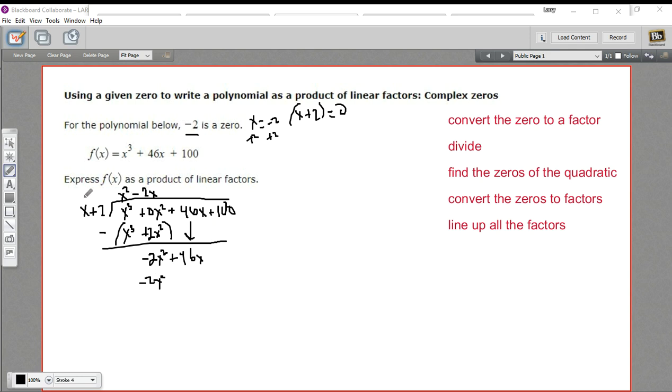And now we're going to subtract this. Kind of be careful about the signs when you do this. Negative two x squared minus a negative two x squared. That's like a negative two x squared plus two x squared, which is zero. That's what we expected. We always want this first term to disappear. This second term, 46x minus a negative four x. That's like adding four x. So this is actually 50x, positive 50x.